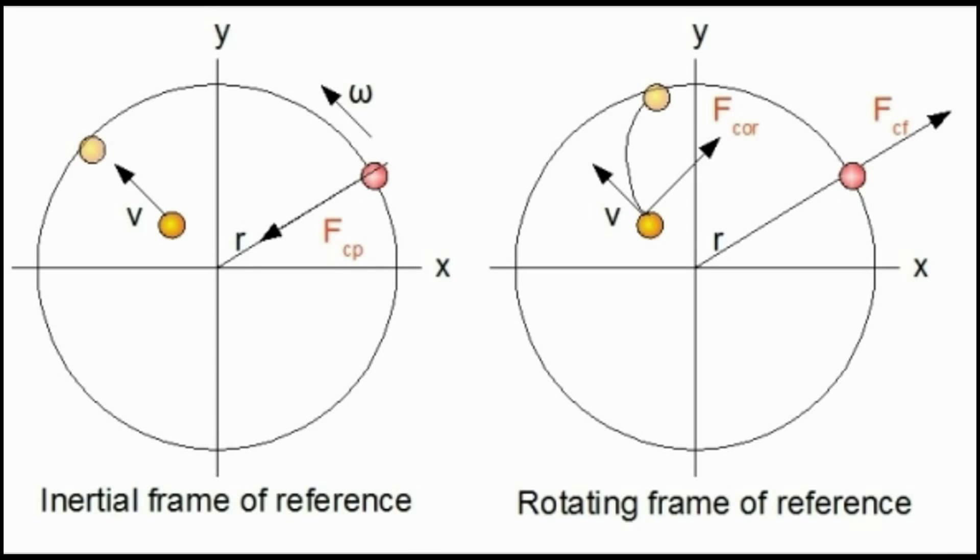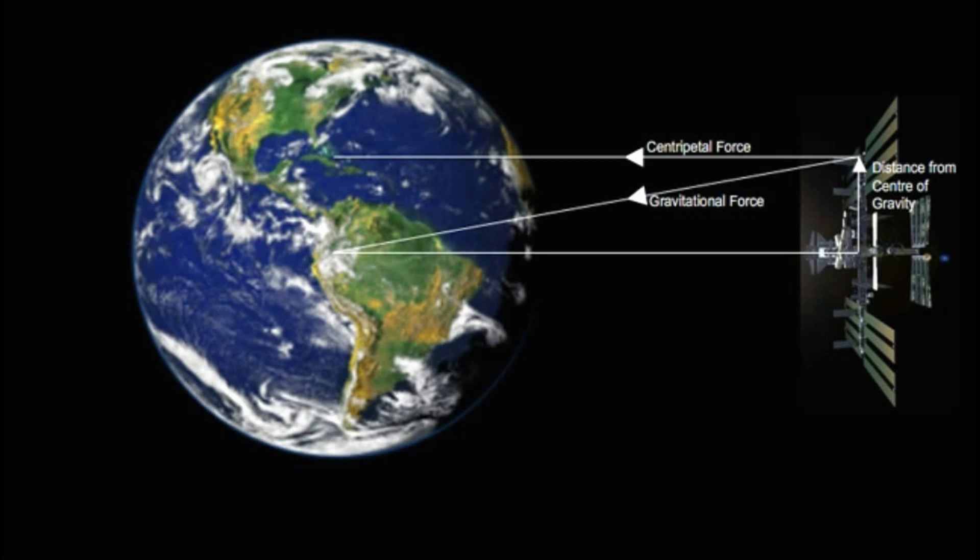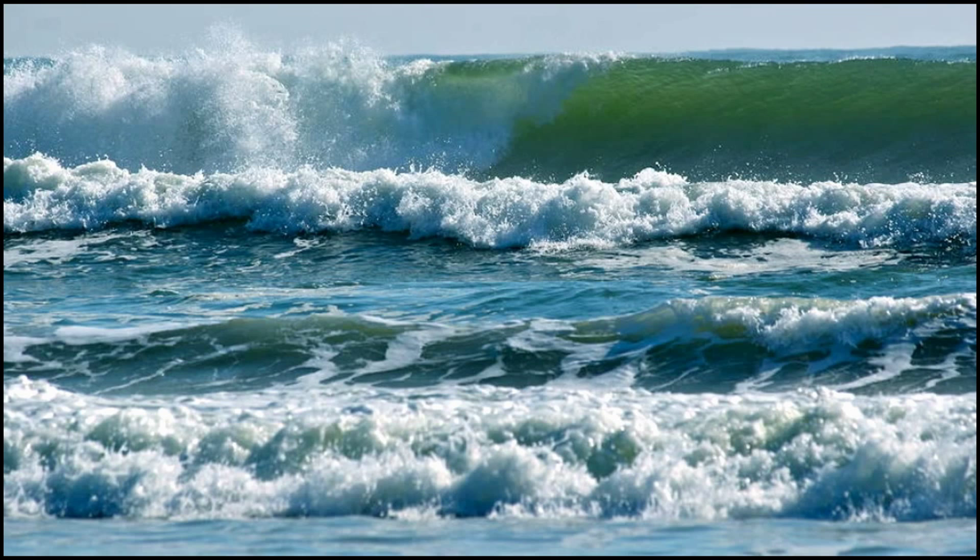The moon exerts less gravitational pull on the far side of Earth, and centrifugal force takes charge, creating another bulge there. Two bulges at opposite ends mean two high tides a day.